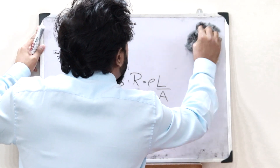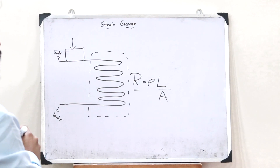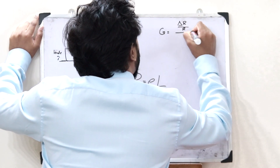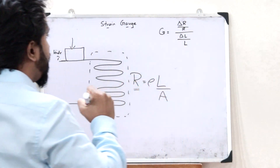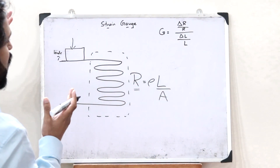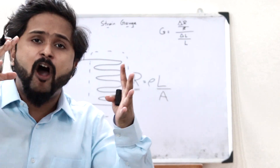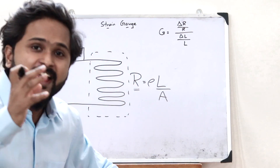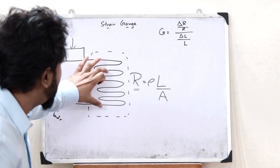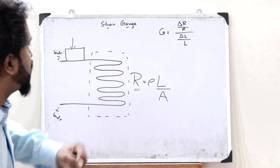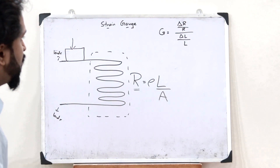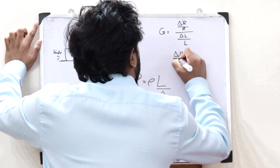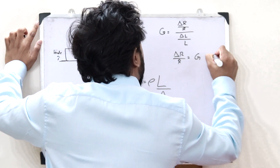There is one important parameter called the gauge factor. The gauge factor is given as G = (ΔR/R) ÷ (ΔL/L). This is the gauge factor of a particular strain gauge. It tells us how much resistance changes when there is a unit change in the length of the coil. From this, we can obtain ΔR/R = G × (ΔL/L).